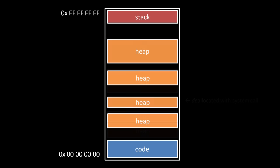Notice that as a process allocates and de-allocates chunks of memory, the memory space can become more and more fragmented, effectively shrinking the size of heap chunks which the OS can allocate, because each chunk must be contiguous.